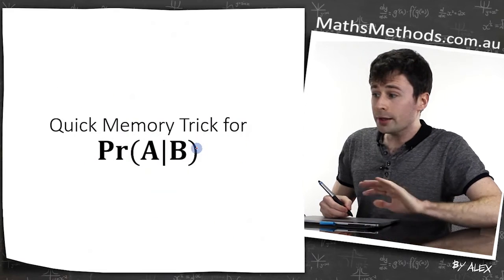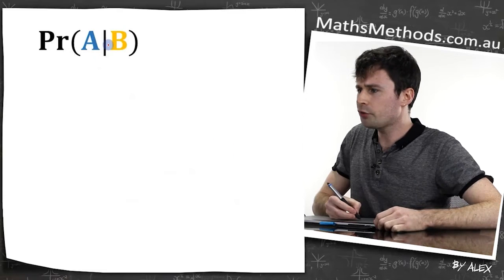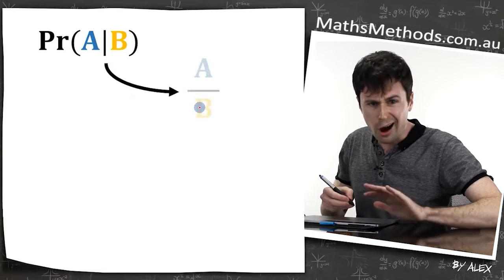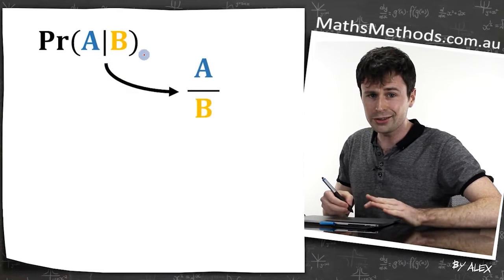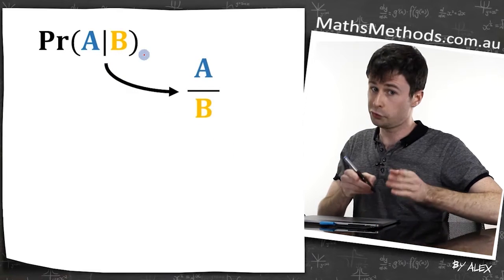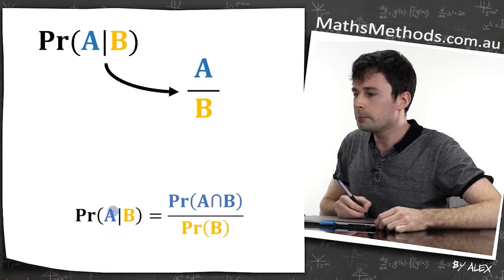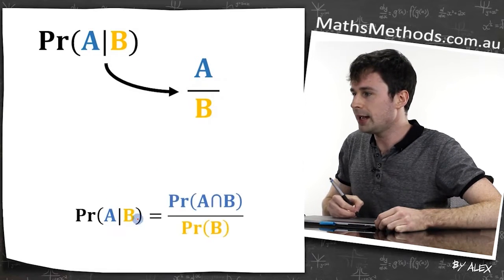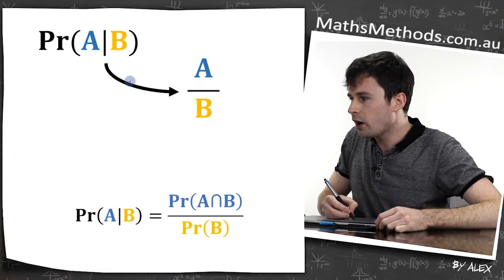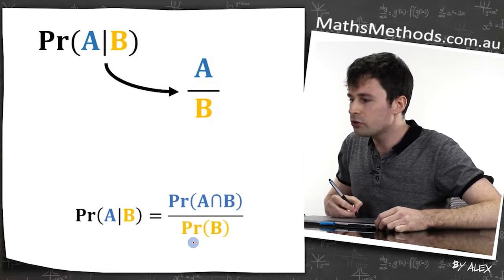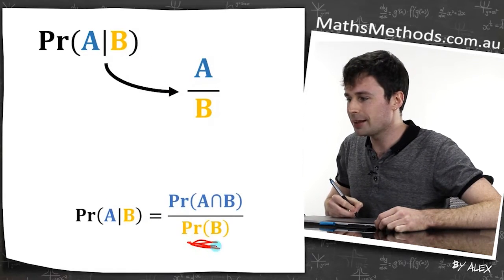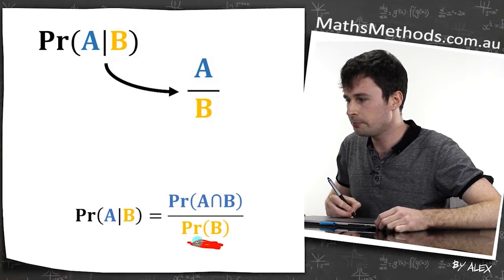A quick memory trick to remember this formula: the 'given' symbol kind of looks like a divided-by sign — it's not, but it looks like one. So the probability of A given B is divided by B, meaning the bottom is going to be the probability of B.